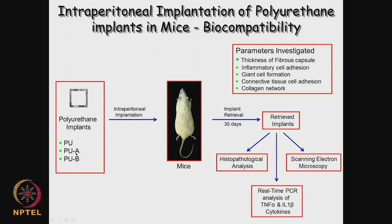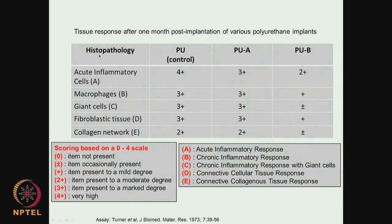Here is another example where we looked at polyurethane, which is widely used in stents, breast implants, tubes and many other places. We have 2 different modifications done to polyurethane and they are placed intraperitoneally for 30 days; then we retrieve the implant and look at histopathological studies. We can look at fibrous encapsulation around the polymer and whether any collagen has been formed. Here we are talking about what changes are happening to the connective tissues — tissue response — and we look at acute inflammatory response, macrophages, giant cells, fibroblastic tissue, and collagen network.